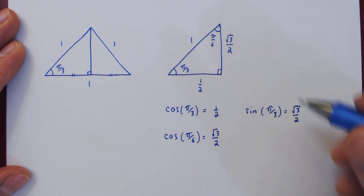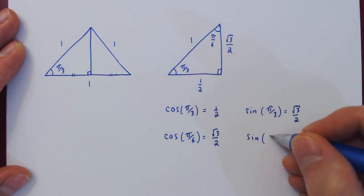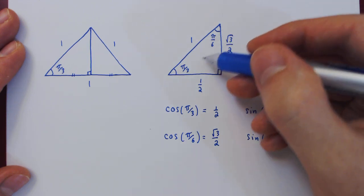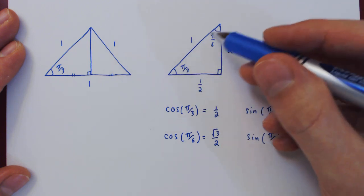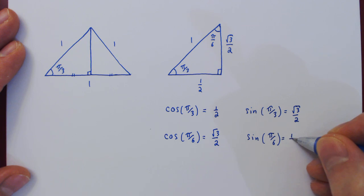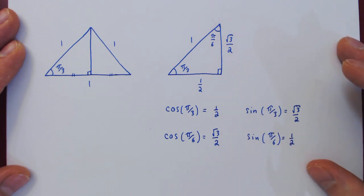And sin(π/6) is the opposite side, 1/2, over the hypotenuse, which is 1. So sin(π/6) is 1/2. And that's it.